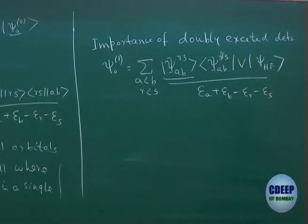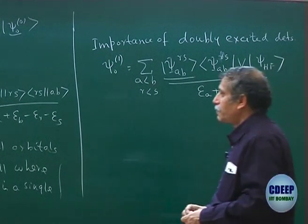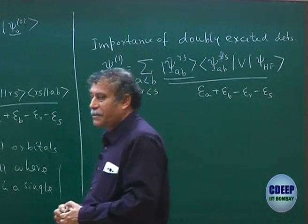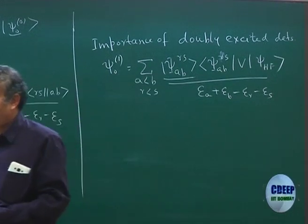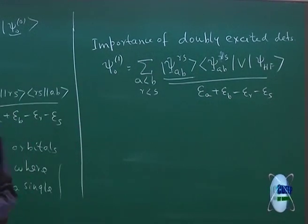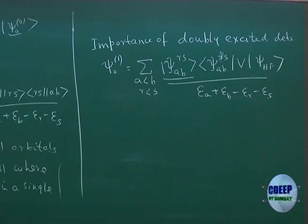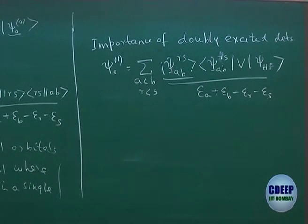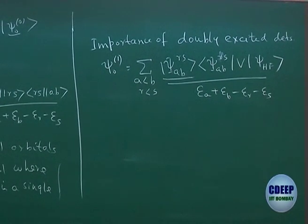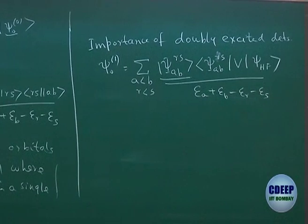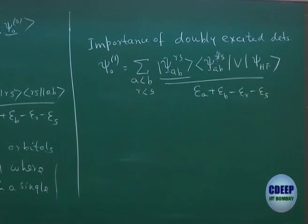Brillouin's theorem essentially dictates that if you start from Hartree-Fock, the first important determinant that contributes at the lowest perturbation order is actually the doubly excited determinant psi_ABRS. That is why I want to highlight the importance of doubly excited determinants, and this will be discussed again when you do CI.